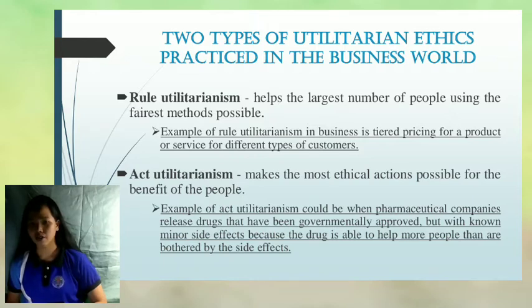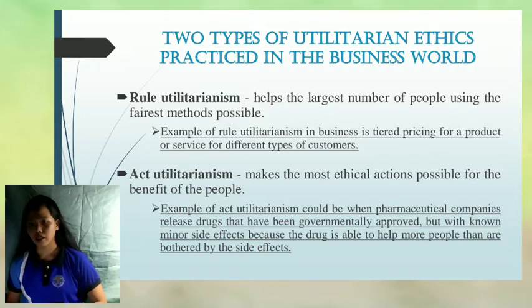Next is Act Utilitarianism. Act Utilitarianism makes the most ethical actions possible for the benefit of the people. An example of act utilitarianism would be when pharmaceutical companies release drugs that have been governmentally approved but with minor side effects, because the drug is able to help more people than are bothered by the side effects. Act Utilitarianism often demonstrates the concept that the ends justify the means, or that it's worth it.